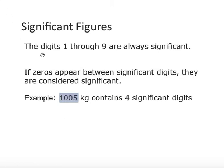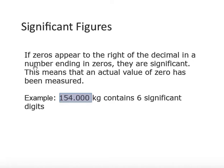The digits one through nine are always significant. If zeros appear between significant digits, they are considered significant. So, 1005 would contain four significant figures. If zeros appear to the right of the decimal in a number ending in zeros, they are also considered significant — this means that an actual measured value of zero has been recorded. For example, 154.000 kilograms contains six significant digits or six significant figures.